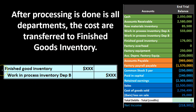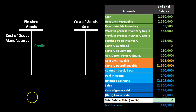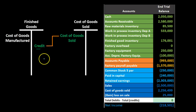The journal entry is a debit to Finished Goods Inventory (increasing) and a credit to Work in Process — Department B (decreasing). Now the goods are in finished goods, and we're in a similar situation to a merchandising company — ready to sell the inventory.